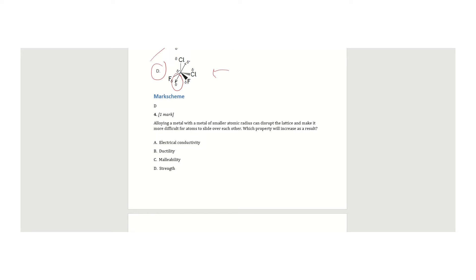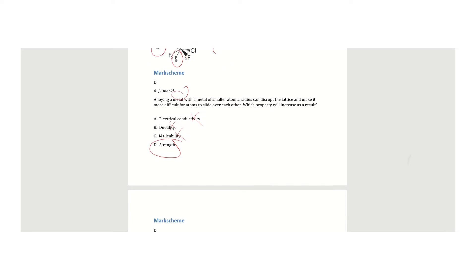The next question says alloying a metal with a metal of smaller atomic radius can disrupt the lattice and make it more difficult for atoms to slide over each other — which property will increase as a result? When I fit the metal with smaller atoms, it stops them from sliding over each other, making the metal very strong. So I'm not looking at electrical conductivity, ductility, or malleability. I'm looking for strength, which is the correct answer.